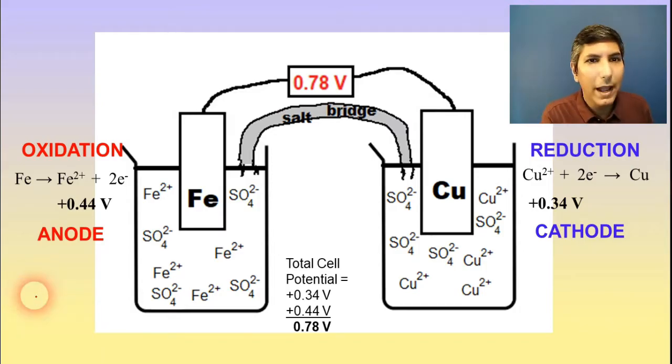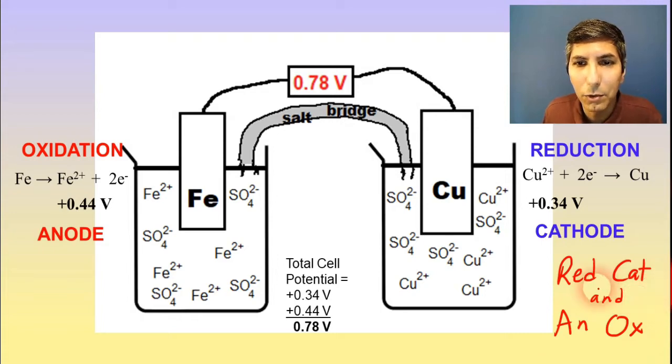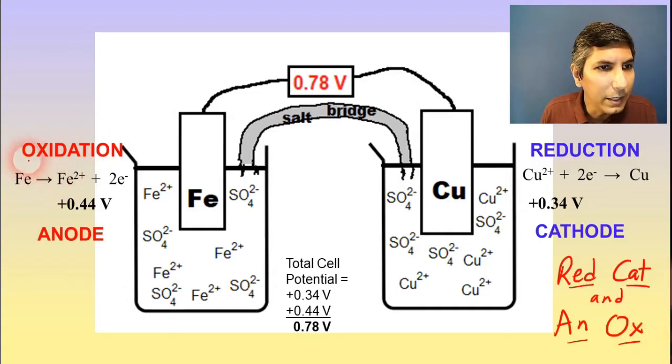And there are perhaps some mnemonic aids that people use. A very common one that I show my students is you can think of a red cat and an ox. And so if you think of a red cat and an ox, you'll realize that reduction takes place at the cathode. And the anode is where oxidation takes place. So that is a nice little nifty mnemonic aid. If you want something that's a little bit more sophisticated, you might think that the words oxidation and anode both start with vowels. And reduction and cathode both start with consonants. So you can do that, too. It kind of works the same way.